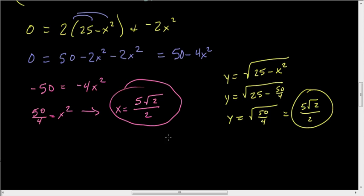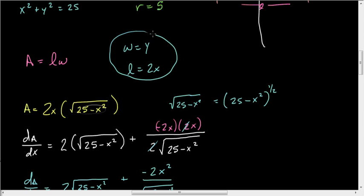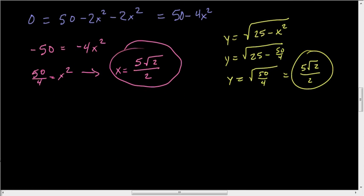And so the width, now be very, very careful here. You found x and y. You did not find the length and the width. The width is y. The length is twice x. So if we finish that out, the width equals 5 square roots of 2 over 2, and the length equals 5 root 2.